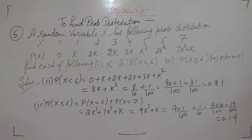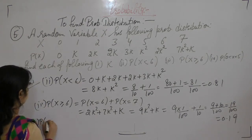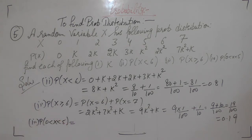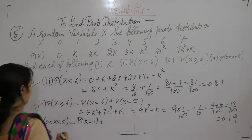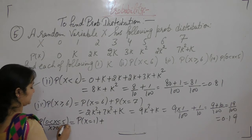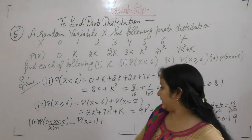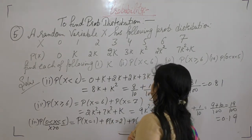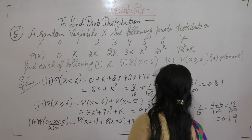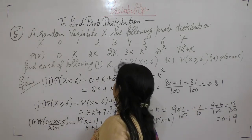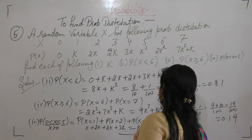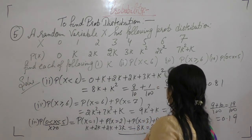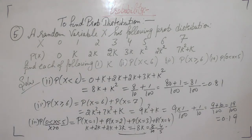The next one is probability of 0 less than X less than 5. That means probability at x=1, 2, 3, and 4. Probability at x=1, 2, 3, 4 gives k plus 2k plus 2k plus 3k, which equals 8k. Since k is 1 by 10, the answer is 8 by 10, which simplifies to 4 by 5.